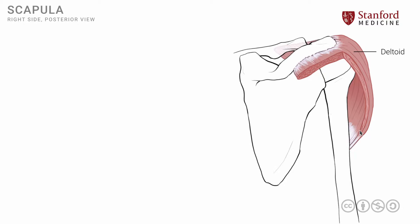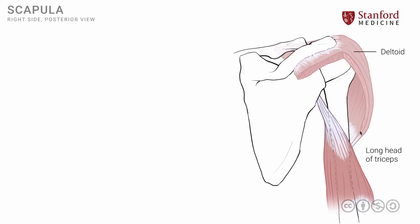The first of these structures is known as the long head of the triceps muscle. 'Tri' meaning three and 'ceps' meaning head — triceps is a muscle that has three heads. This is the long head of the triceps, and it has an attachment onto the scapula just below the glenoid cavity. This particular location is called the infraglenoid tubercle.